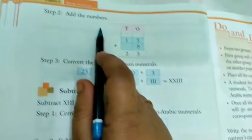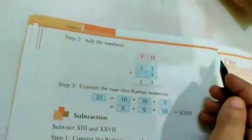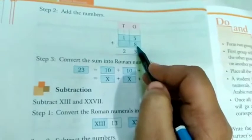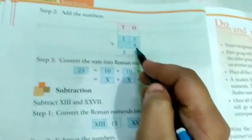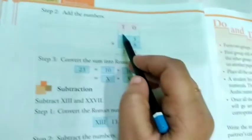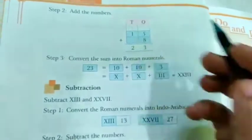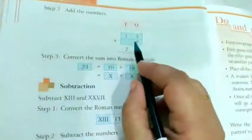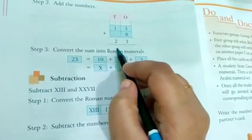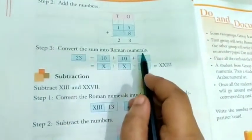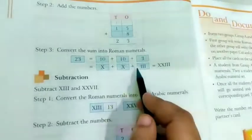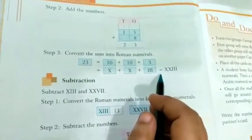Add the numbers. So how you have to add? 5 and 8. So 5 and 8 is 9, 10, 11, 12 and 13. 3 here down and 1 carry over. So 1 plus 1 that is 2. So convert the sum into Roman numerals. So 23 that is 10, 10, 20 plus 3, and then we have to convert it into Roman numerals.